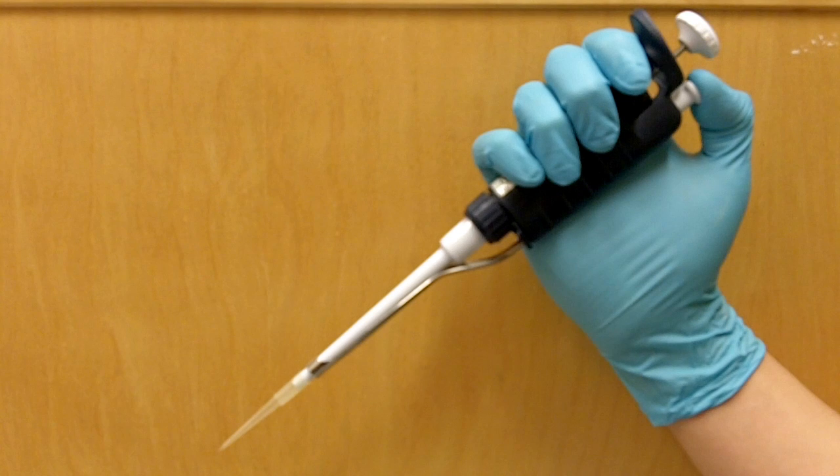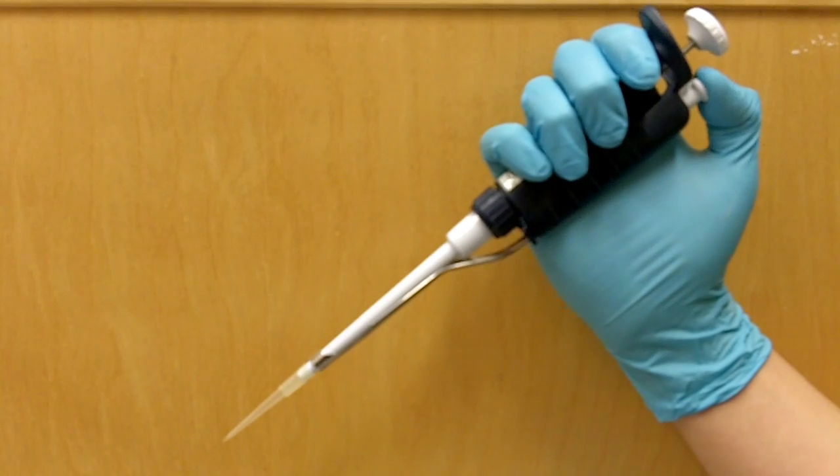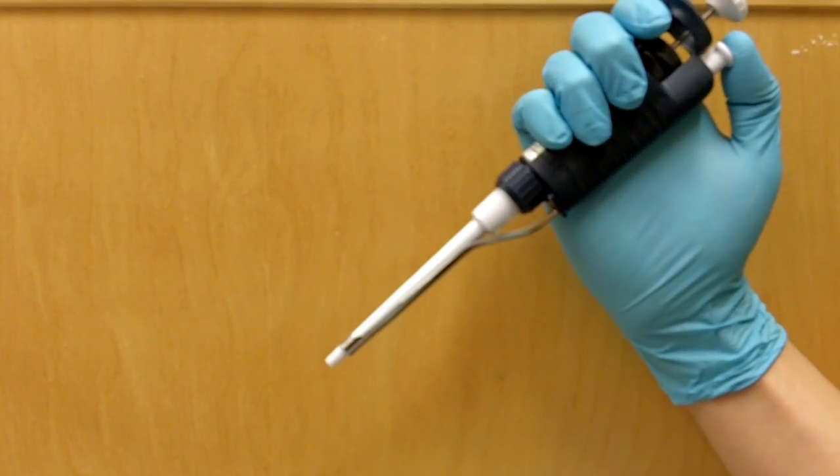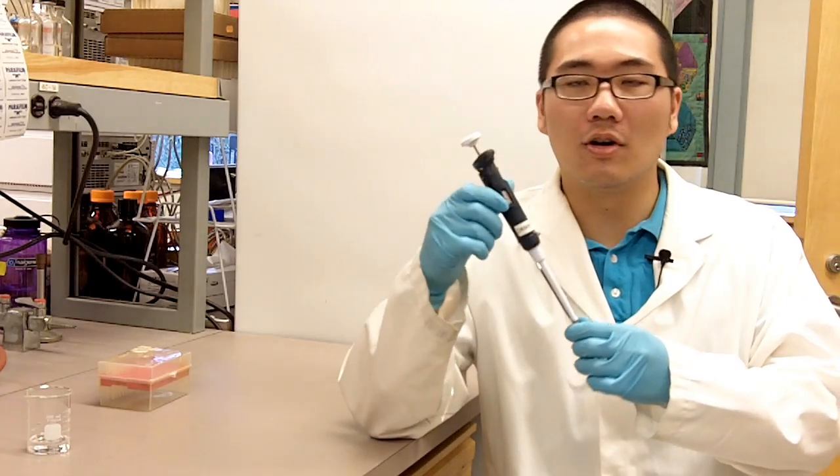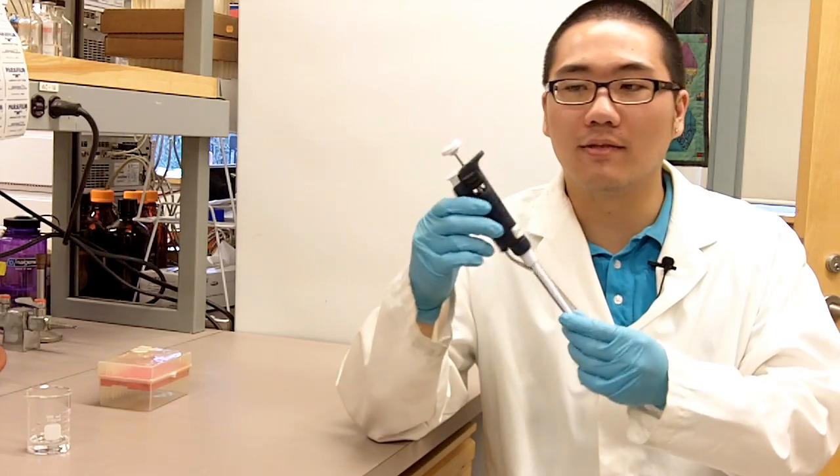And then to eject the tip, all you have to do is press the tip ejection button like that. Now you know all the basic parts of the pipette.